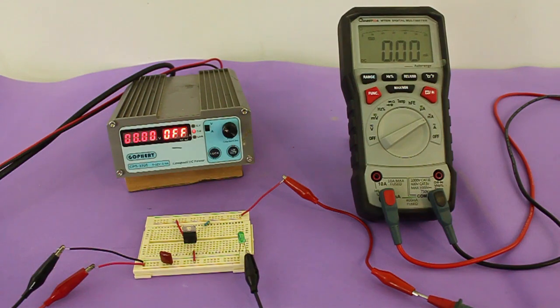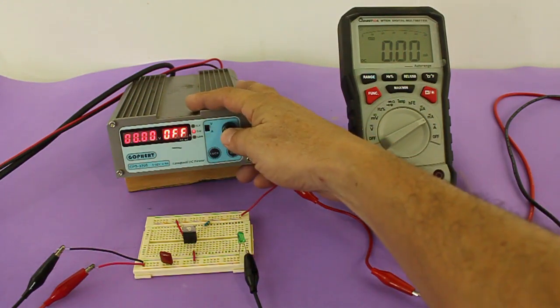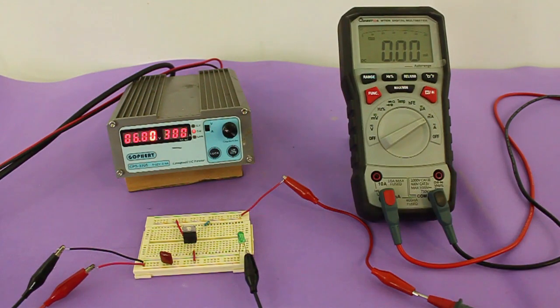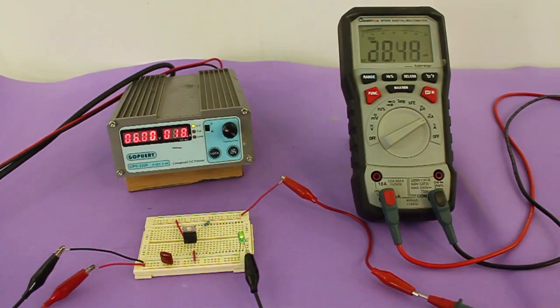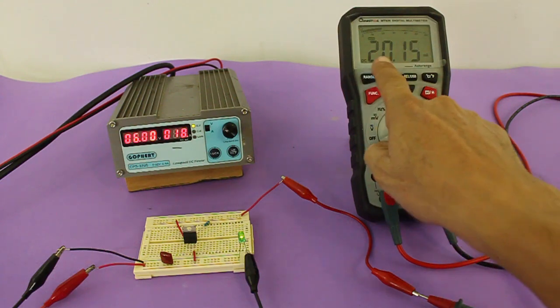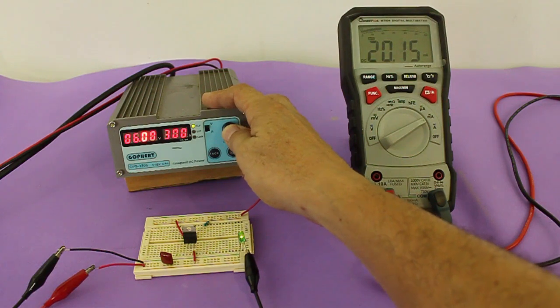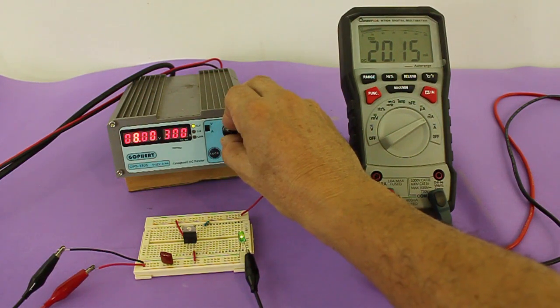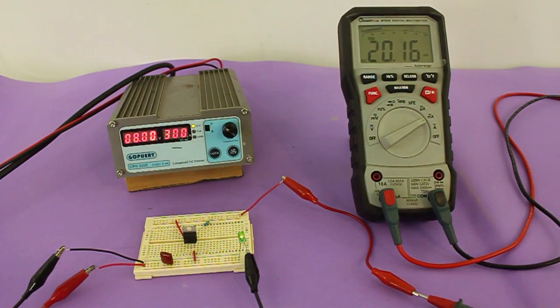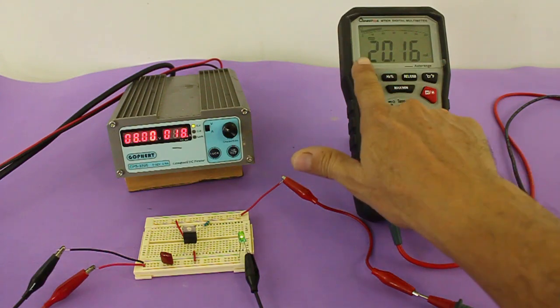Okay, let's test the circuit. I am using an LED and I have the multimeter to check the current. Let me turn on the power supply. And at 6 volts, we can see that we have 20.15 milliamps, the value that we calculated. And we can verify that if we change the input voltage, let me put 8 volts, the current remains constant.